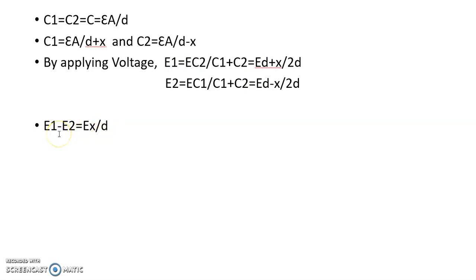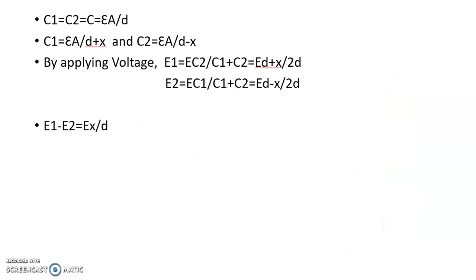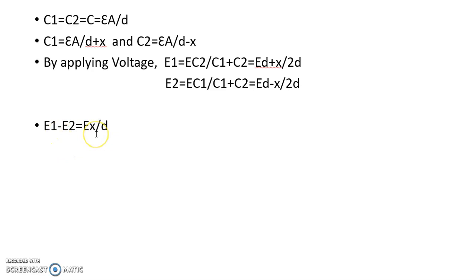The difference voltage e1 minus e2 is directly proportional to the displacement x of the central plate. So as displacement of the central plate increases, the difference voltage e1 minus e2 increases. Therefore, this differential capacitor system can be used to measure displacement in terms of the difference voltage e1 minus e2.